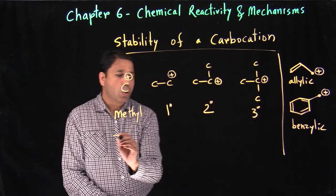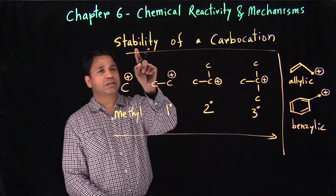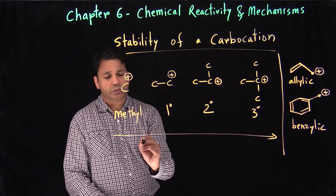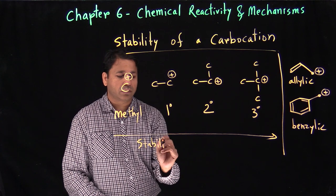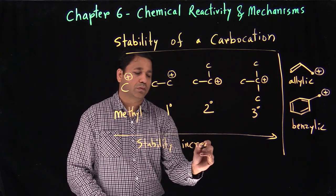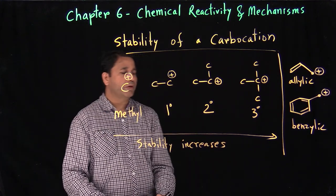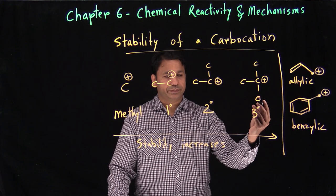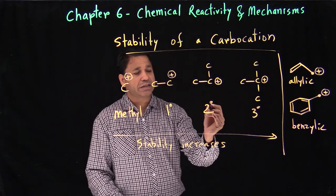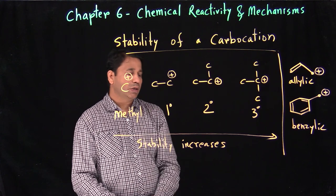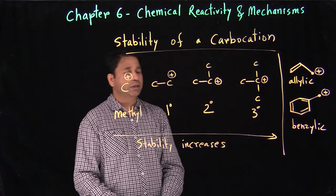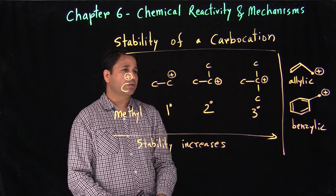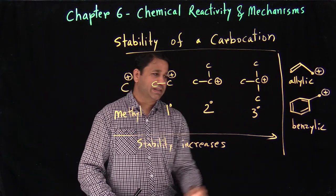The order of stability increases from left to right: tertiary is the most stable, followed by secondary, then primary, and methyl is the least stable. This stability order is important and we'll learn why as we progress.